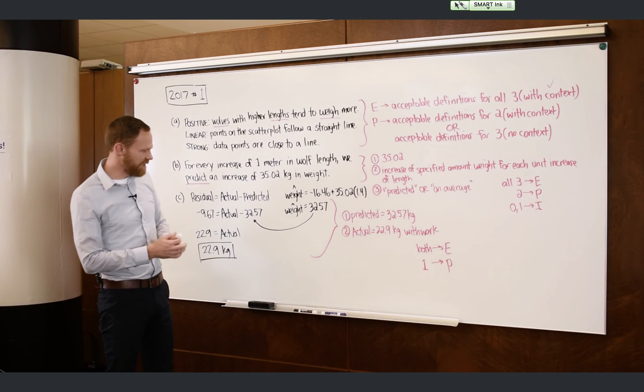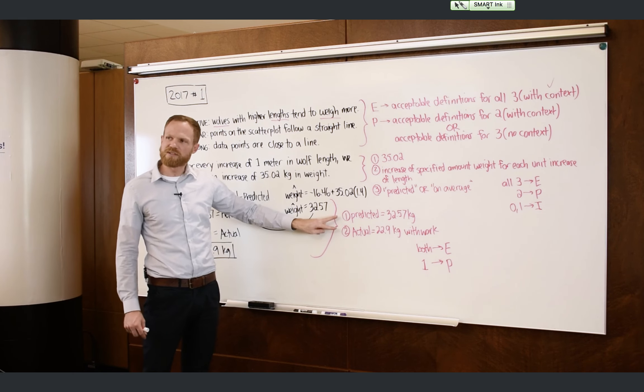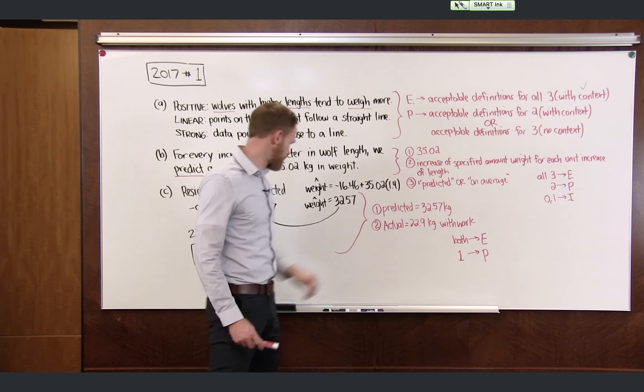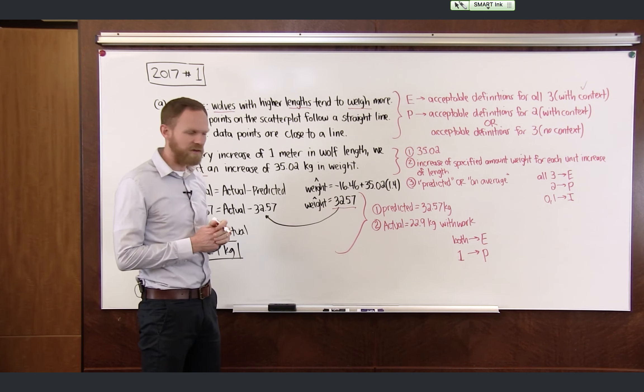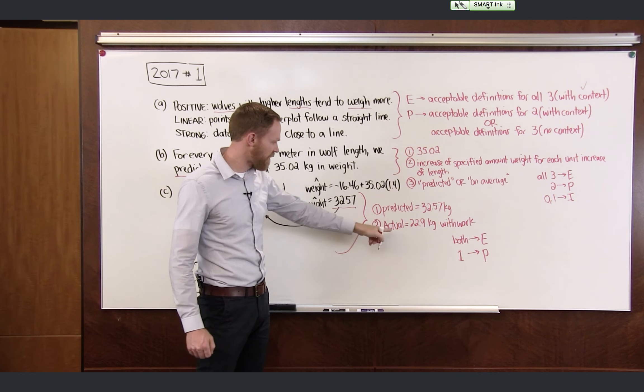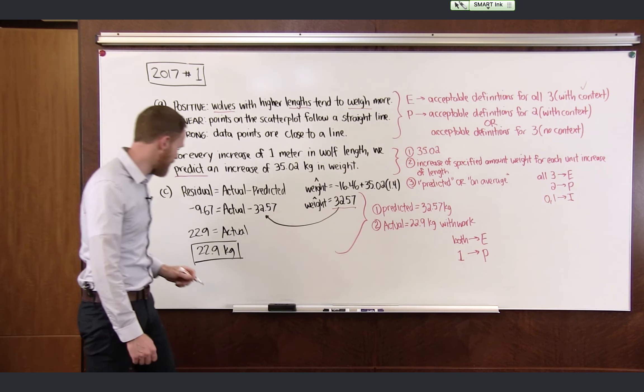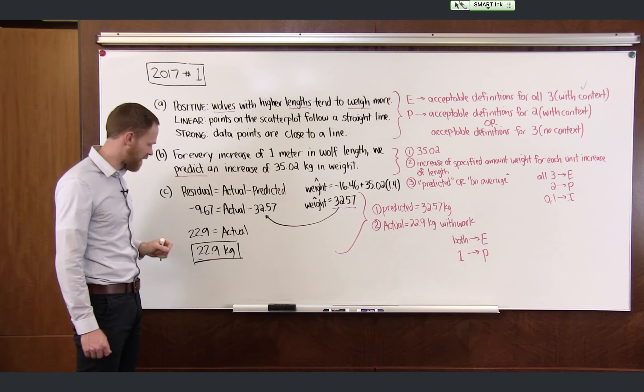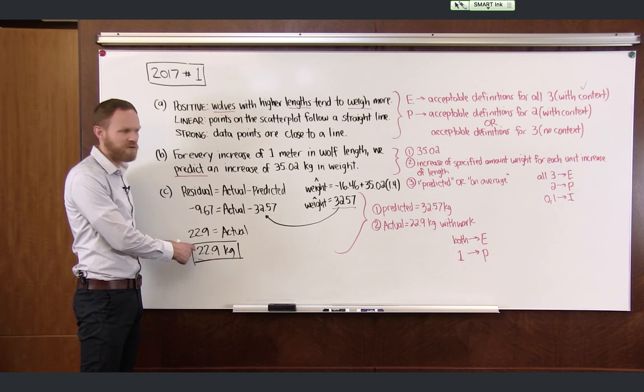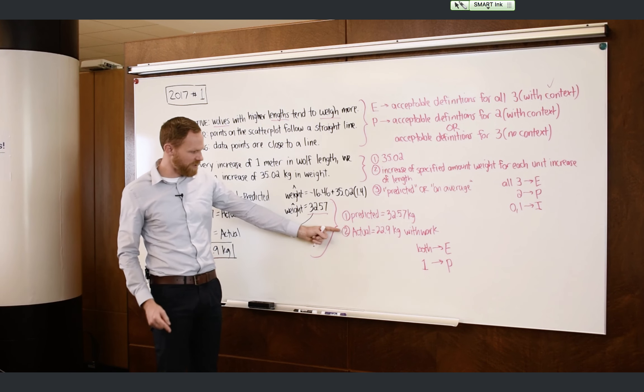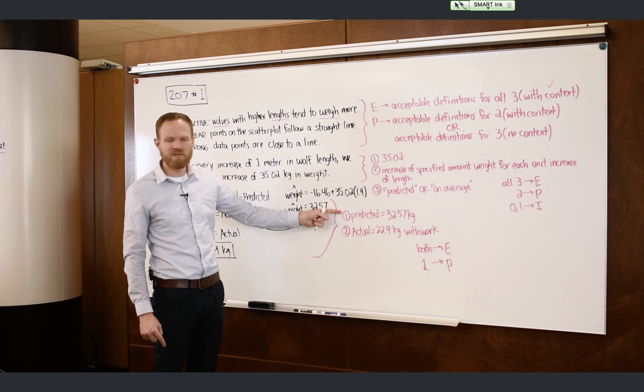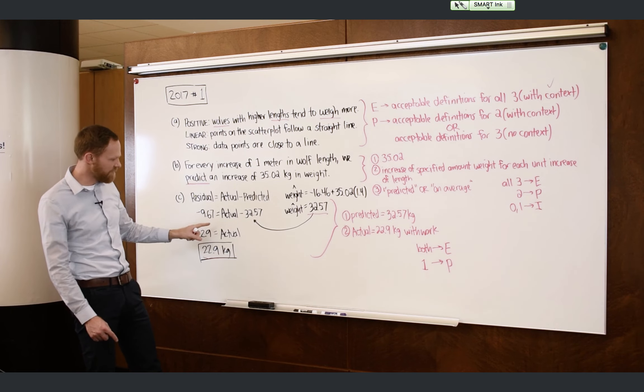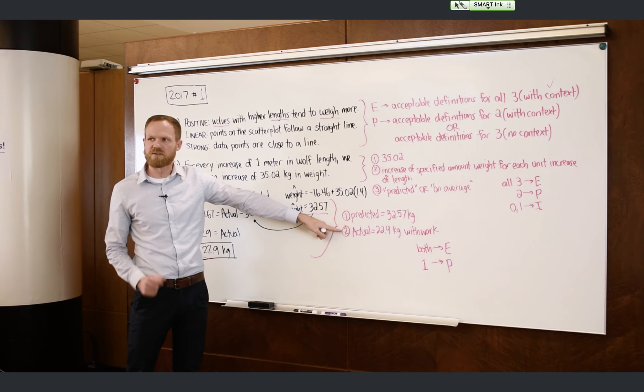And finally, part C, let's take a look at. And for this one, there are two components that are necessary in order to get full credit. First, you have to have calculated your predicted value as 32.57, which is what we have here. And then secondly, you have to calculate the correct actual value of 22.9 with work. So clearly showing that you're using the residual and the predicted value in order to arrive at the actual value here. Now, it is possible for you to get credit for part two, even if part one is incorrect. If you use an incorrect answer and you show your work here, you can still get credit for the actual, even if your answer is incorrect.